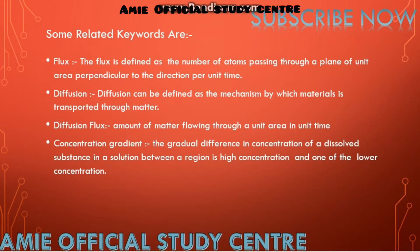The key terms include flux, diffusion, diffusion flux, and concentration gradient. Flux is defined as the number of atoms passing through a plane of unit area perpendicular to the direction per unit time. In simple language, flux describes how many atoms are moving through how much area in how much time.